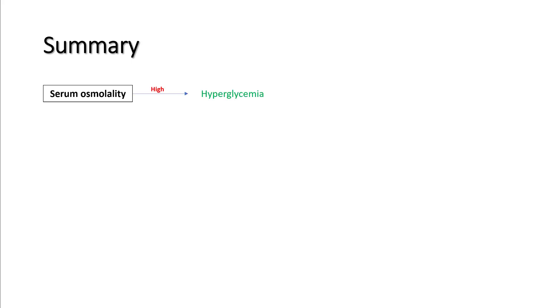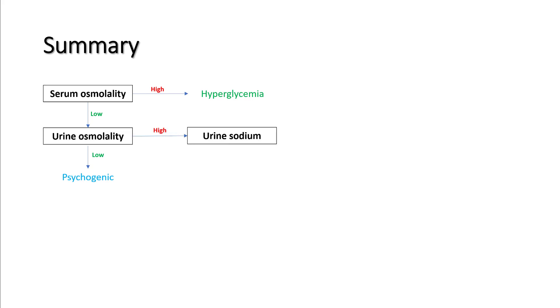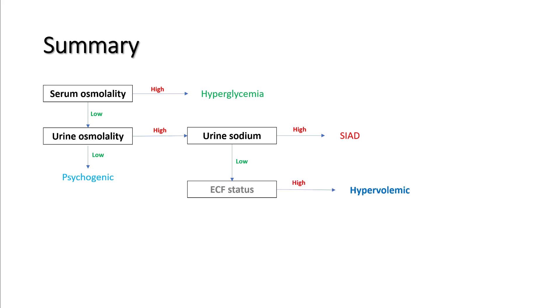In summary: step one, check serum osmolality — if it is high, you are possibly dealing with additional osmotic agents besides sodium. If osmolality is low, check urine osmolality. If urine osmolality is low, your system is working appropriately and you are likely drinking more water than solute. If urine osmolality is high, you're dealing with a high ADH state, so check urine sodium to figure out intravascular volume status. If urine sodium is high or normal, you possibly have SIAD. If urine sodium is low, you're dealing with intravascular volume depletion — then look at your volume status to distinguish hypervolemic from hypovolemic hyponatremia.